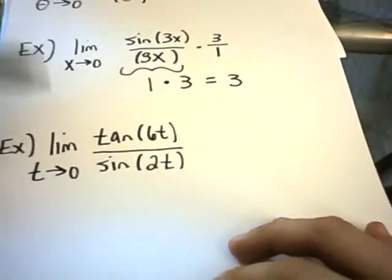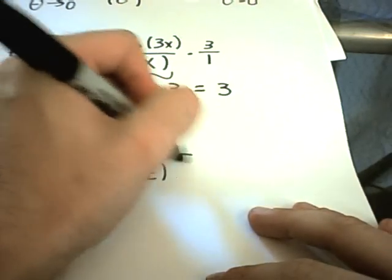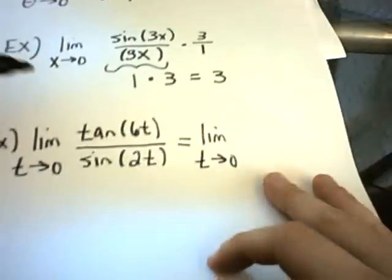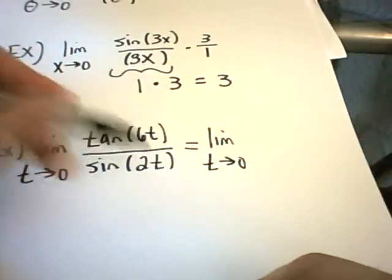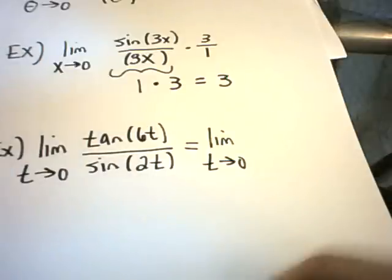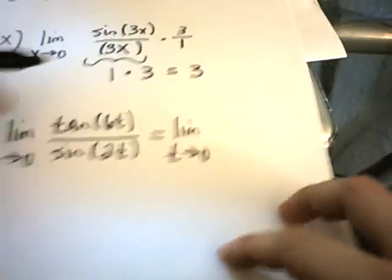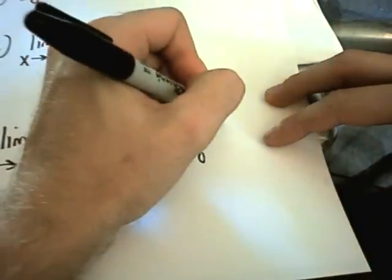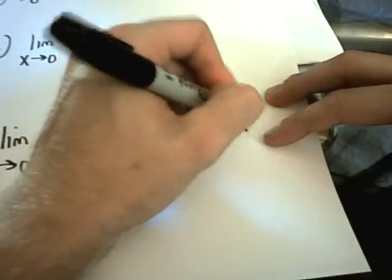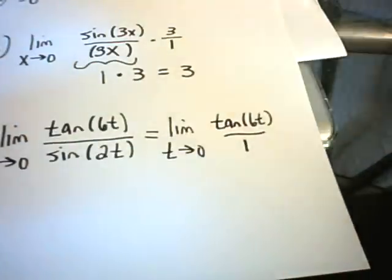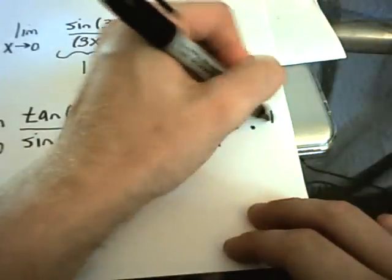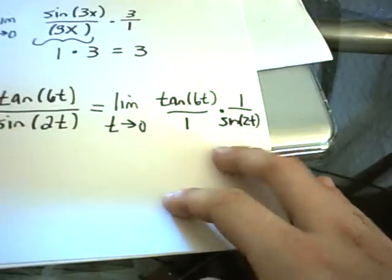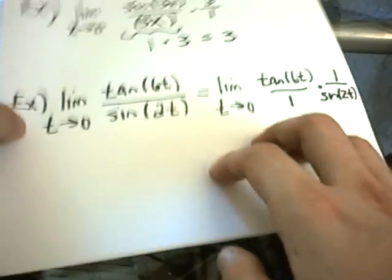The next one's a touch more complicated. I'm going to rewrite this. I have the limit as t goes to 0. Again, you should check, if you plug in 0, you get sine of 0, which is 0. On top, you'll get tangent of 0, which is 0. So we do have 0 over 0. I'm going to rewrite this so that I have tangent of 6t over 1 times 1 over sine of 2t.